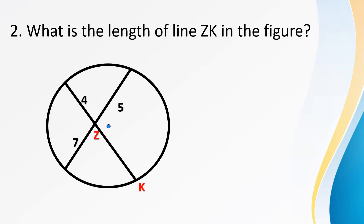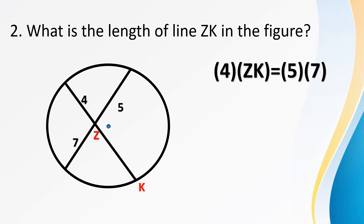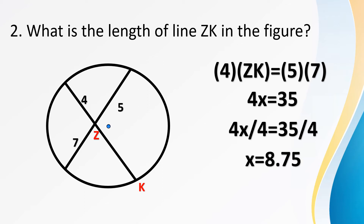Next problem: what is the length of line ZK in the figure? There are two intersecting chords. The values 4 and ZK came from the first chord, and the measurements 5 and 7 came from the second chord. Multiply 4 times ZK and 5 times 7. Replacing ZK with X: 4 times X equals 35. Divide both sides by 4, so X equals 8.75. To verify: 4 times 8.75 equals 35, confirming both products are equal.